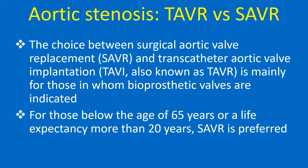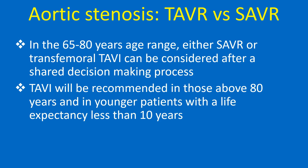The choice between surgical aortic valve replacement and transcatheter aortic valve implantation is mainly for those in whom bioprosthetic valves are indicated. For those below the age of 65 years or a life expectancy more than 20 years, SAVR is preferred. In the 65 to 80 years age range, either SAVR or transfemoral TAVI can be considered after a shared decision-making process. TAVI will be recommended in those above 80 years and in younger patients with a life expectancy less than 10 years.